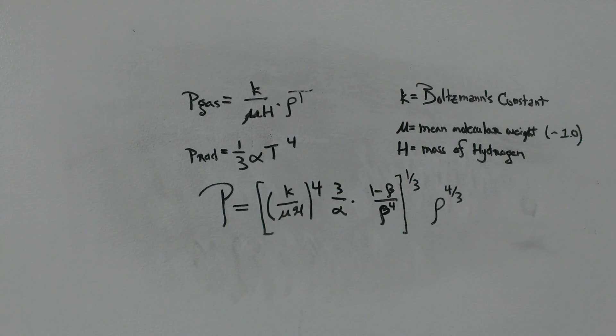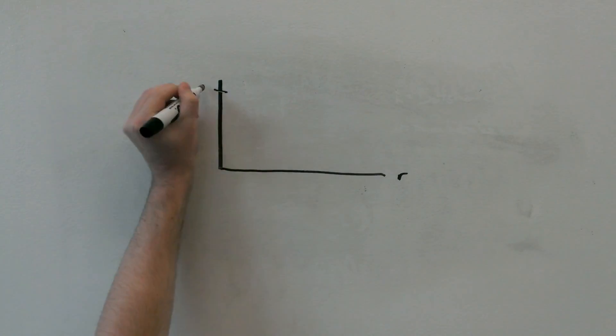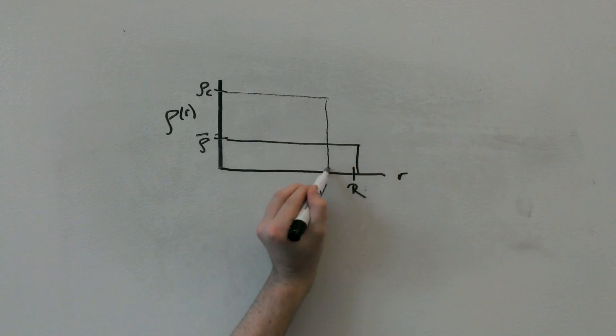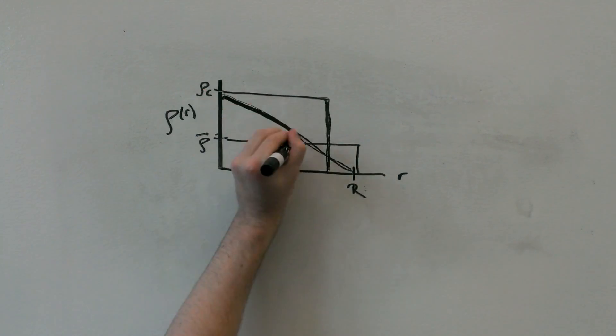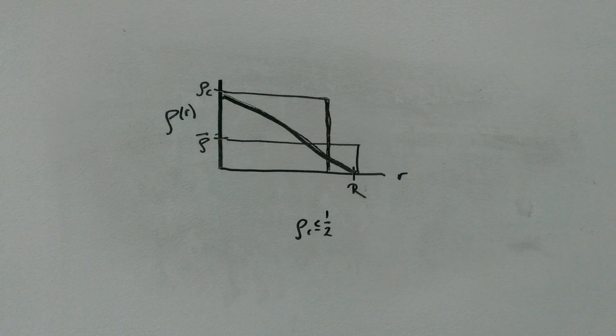To deal with the density issue, Chandrasekhar made the observation that there were two homogenous solutions to the density function. Namely, that the density throughout is equal to the density at the center, or that the density throughout is equal to the average density of the star.